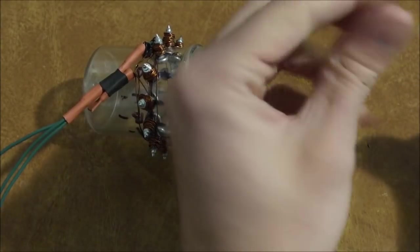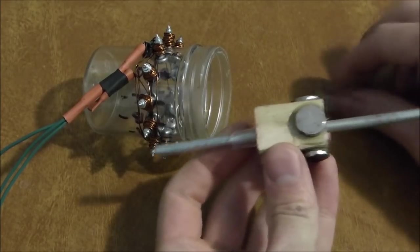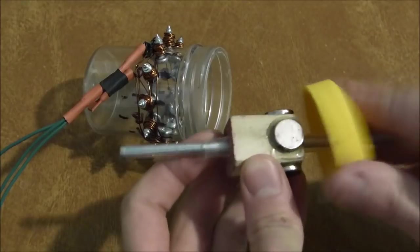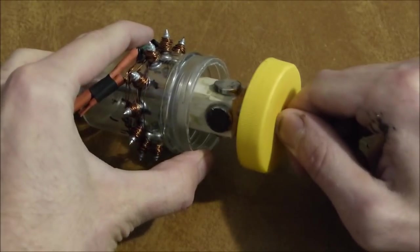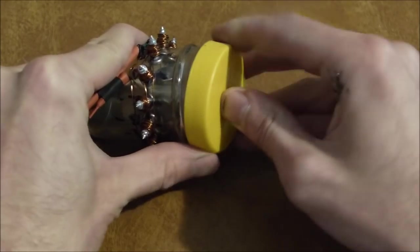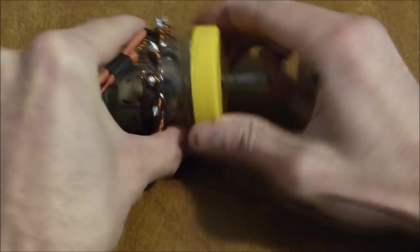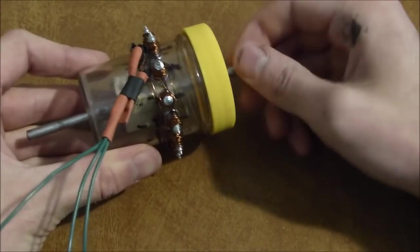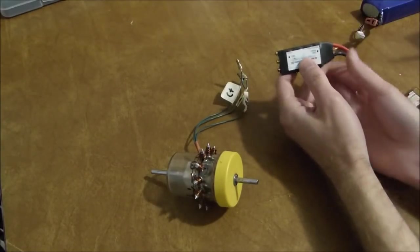I made the spacers out of a couple pieces of used plastic drinking straw. And these will keep the shaft from being able to slide forward and back very much.